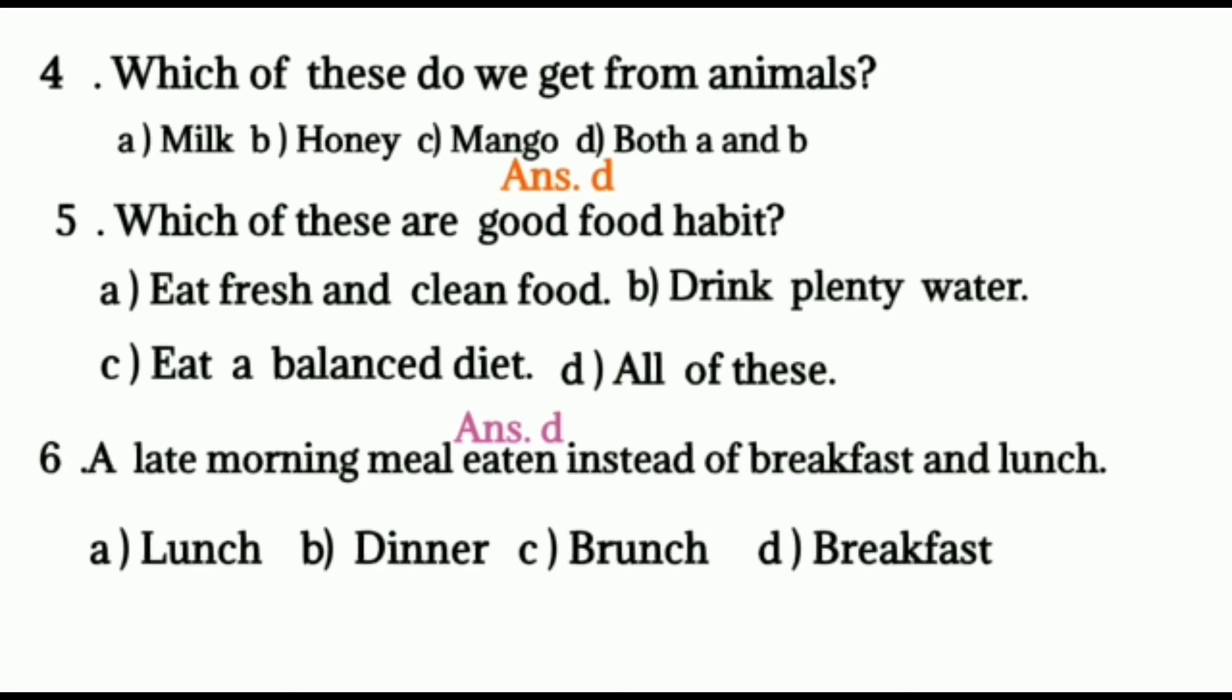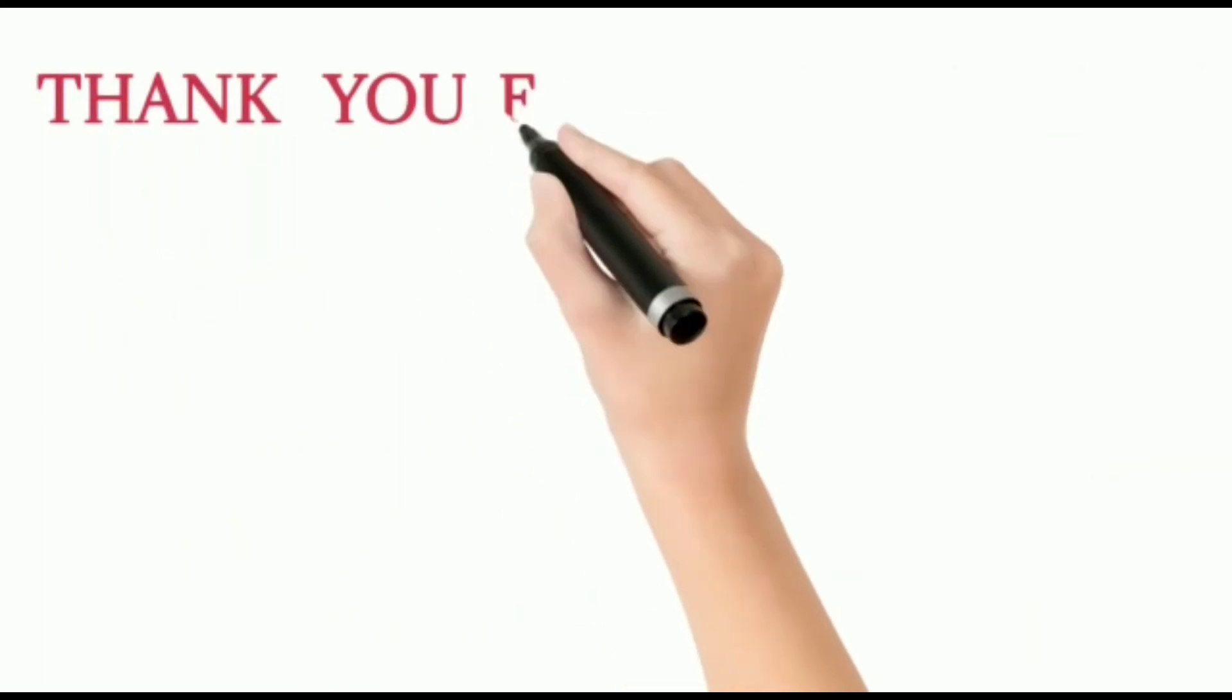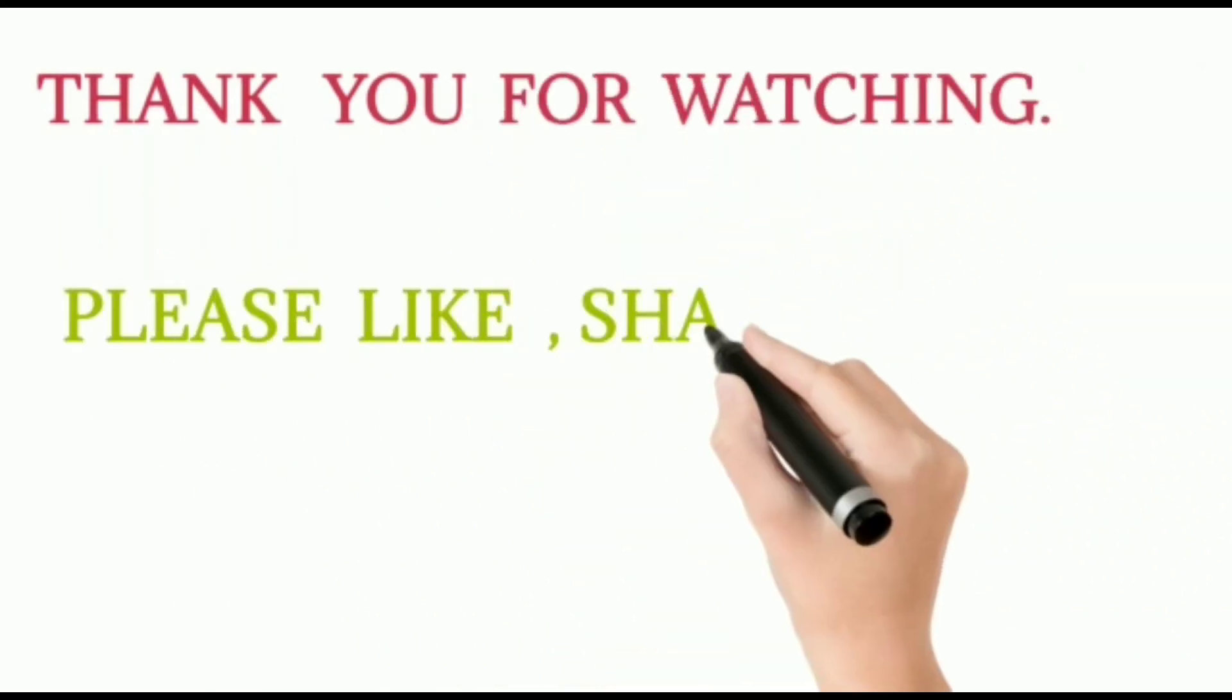Six, a late morning meal eaten instead of breakfast and lunch. That is answer C. Brunch. Brunch is a combination of breakfast and lunch. That is mainly three meals in a day.